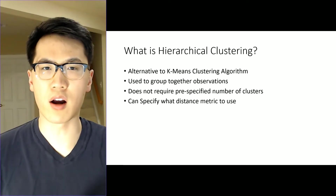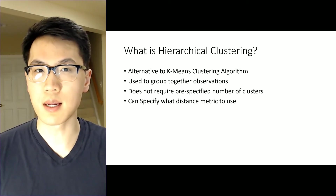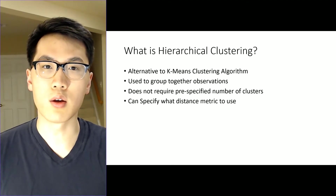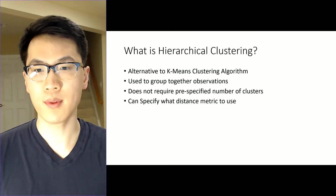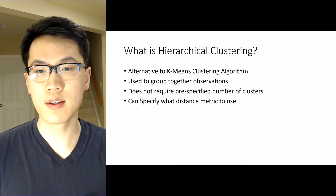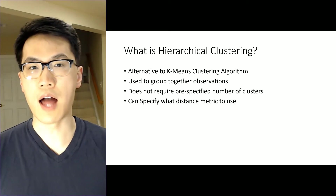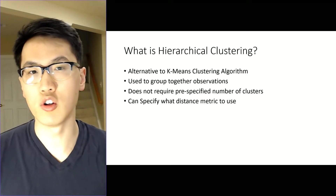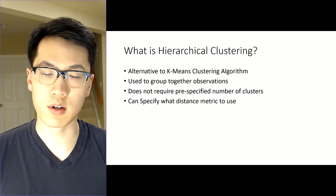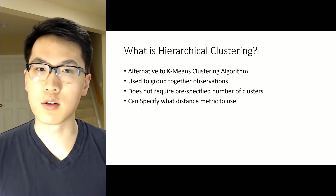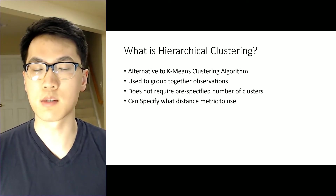So what is hierarchical clustering? It's an alternative to the k-means clustering algorithm. It essentially does the same thing — the net result is that this algorithm groups together observations into the same group. It will typically formulate the number of clusters either top to bottom or bottom to top. You can also specify what type of distance metrics to use, compared to k-means where everything is Euclidean. You can use different distance metrics within this particular method.